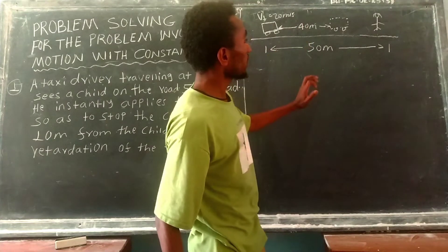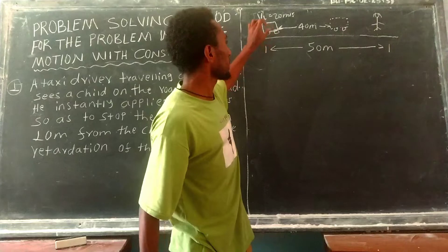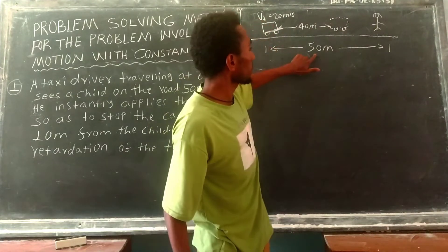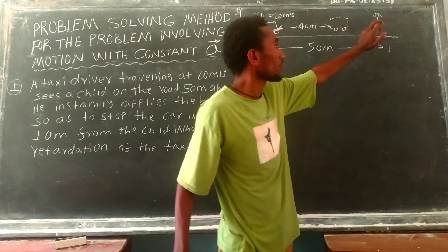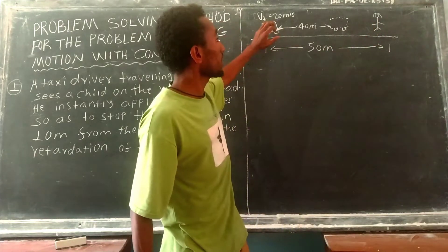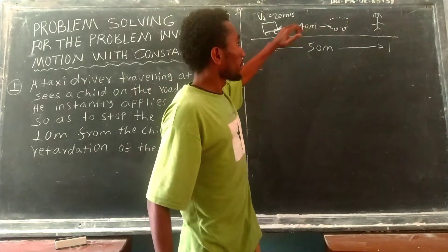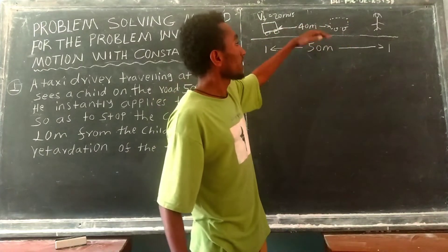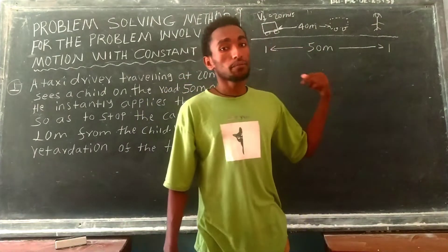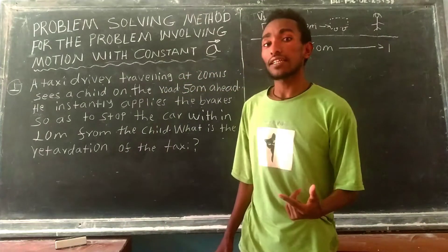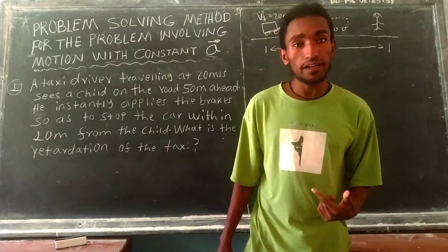The motion diagram is a very important step. I will start with the motion diagram. Step 2 is drawing the diagram. Step 3 is to identify the given and required quantities.